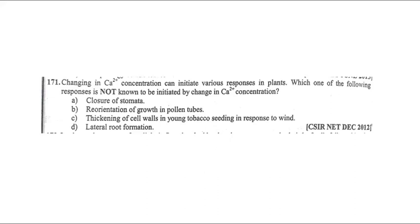Some questions based on water stress and osmotic adjustment. Changing calcium concentration can initiate various responses in plants. Which one of the following responses is NOT known to be initiated by calcium concentration? Closure of stomata is initiated by calcium. Reorientation of growth in pollen tubes - calcium also helps with this. Thickening of cell walls - calcium is an essential component. Lateral root formation - calcium does NOT help in lateral root formation, so this is the answer.